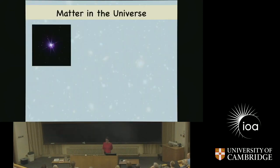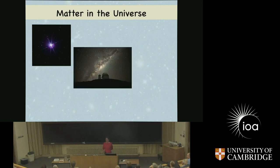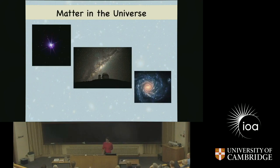So all of you are familiar with the simplest form of matter — a star. You've seen that. If you are particularly lucky, you've already seen the Milky Way. And you obviously all know that we have many, many galaxies out there, which themselves are just huge assemblies of stars — 700 billion stars in each galaxy.